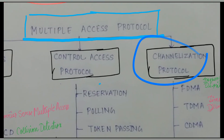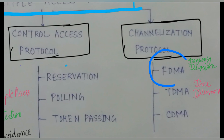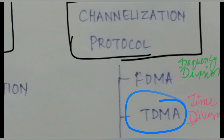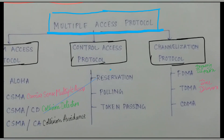Now, talking about the channelization protocol — in this channel you use frequencies. What happens in FDM — frequency division multiplexing? A particular frequency bandwidth is provided. Just like FM radio stations have a particular frequency, if that frequency comes, the message is transmitted. This is your time division protocol as well. So this is how each layer works.